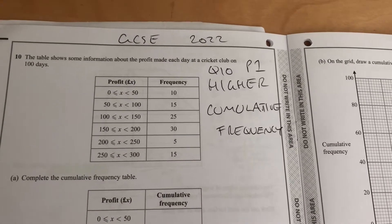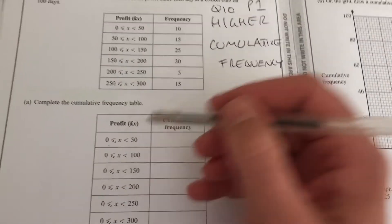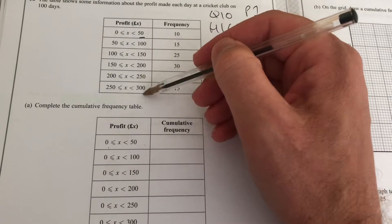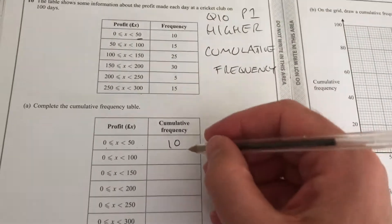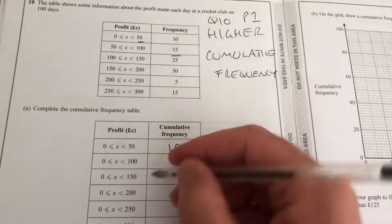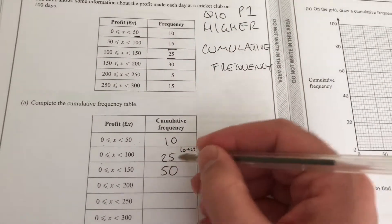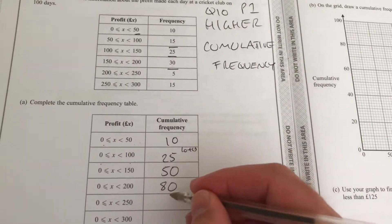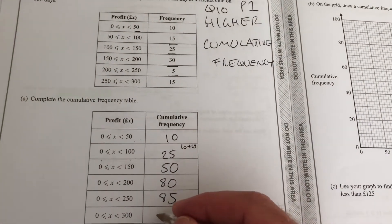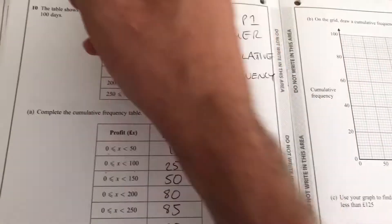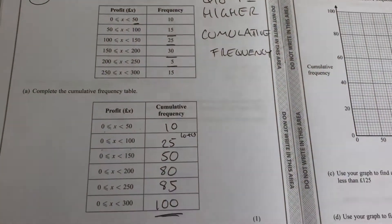Now we have to turn that into a cumulative frequency table. That means it's always going to start from 0 up to this interval here and then going down that column. So the first category is 10, just like that table. But now we're going to add 10 and 15 to get 25. Now add that 25 to get to 50, add the 30 to get to 80, add that 5 to get 85, add that 15 to get to 100. And that total should be the same total as that one there.